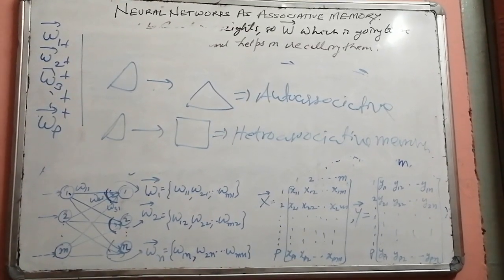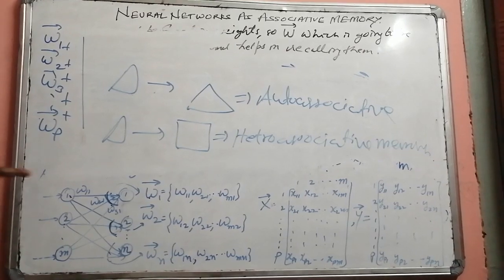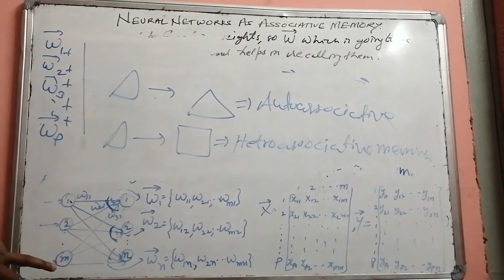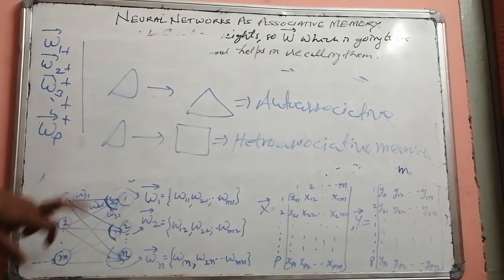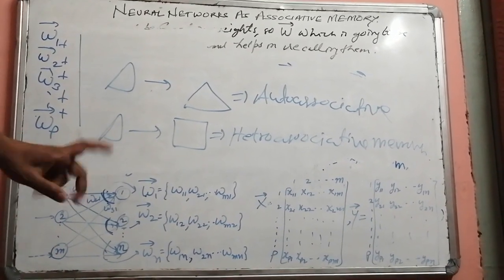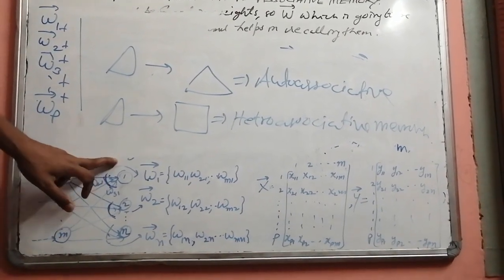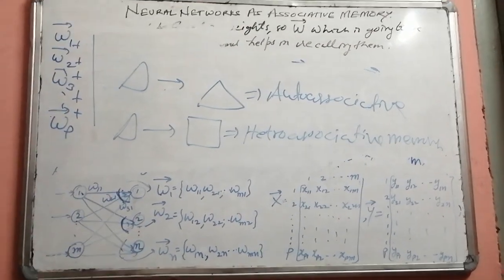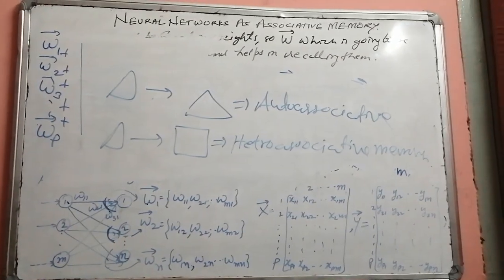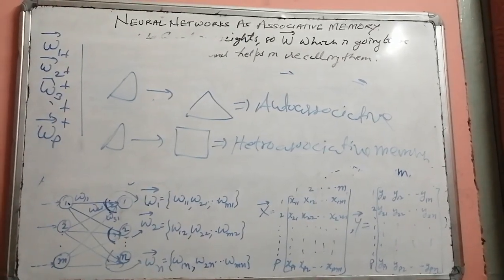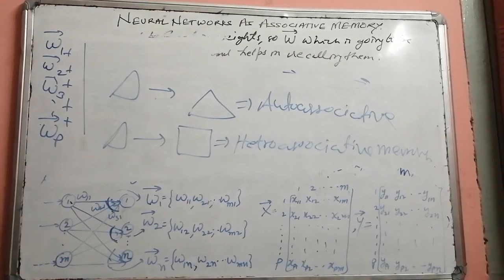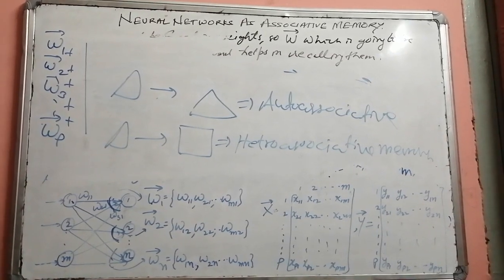The only difference is that in auto-associative memory, if there are M neurons in the input layer, then the output layer will also contain M neurons. All other parts remain the same.